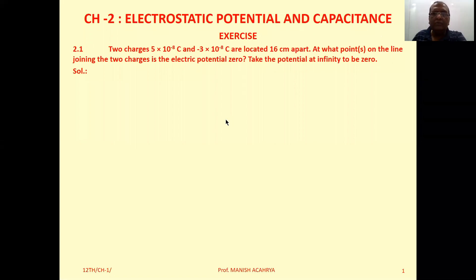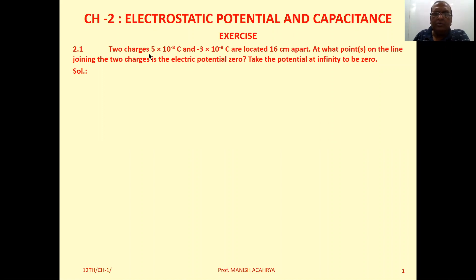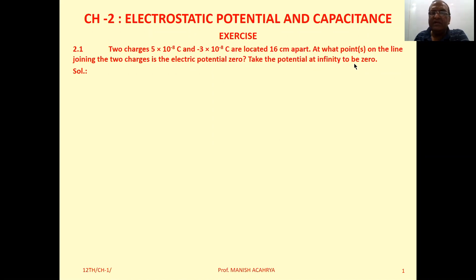Chapter 2, Exercise. Example 2.1-2: Charges 5×10⁻⁸ coulomb and -3×10⁻⁸ coulomb are located 16 cm apart. At what points on the line joining the two charges is the electric potential zero? Take the potential at infinity to be zero.